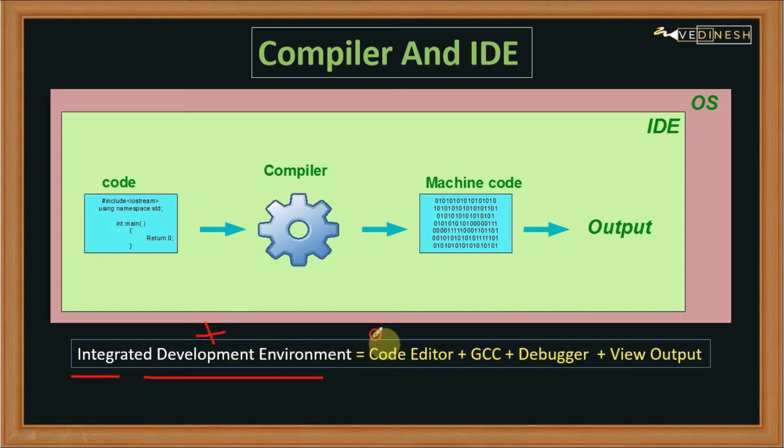This includes a code editor where we can input our code, the GCC which is the compiler, and the debugger which helps in debugging or removing errors and anomalies from our code. Finally we have the output view or console where we can see the output.